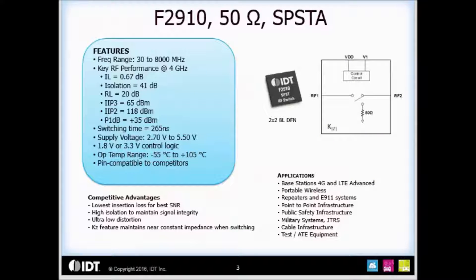Now let's take a closer look at some of the key performance attributes at 4 gigahertz. An insertion loss of 0.67 dB, isolation 41 dB, return loss 20 dB, an IP3 of 65 dBm and an IP2 of 118 dBm, P1 dB of 35 dBm.